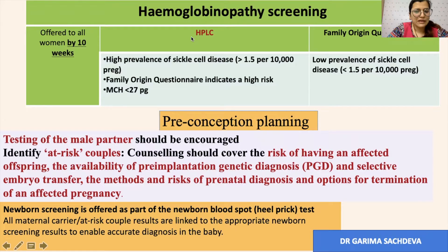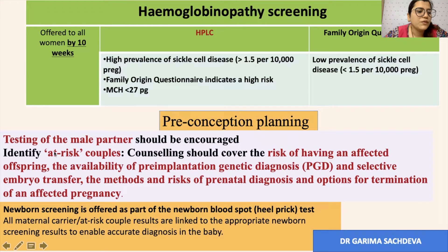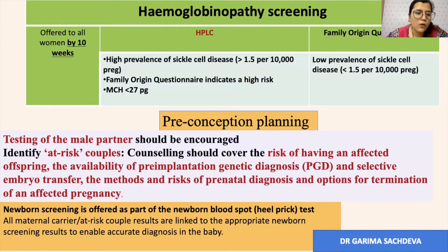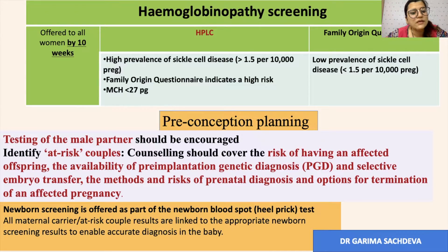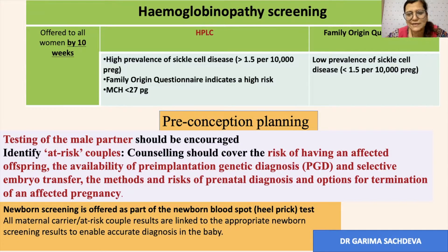Once screening identifies a carrier, you test the male partner. At-risk couples, where both male and female are carriers, are counselled about the risk of an affected offspring. They are offered pre-implantation genetic diagnosis and selective embryo transfer. The methods and risks of prenatal diagnosis and options of termination of pregnancy in case the fetus is affected should be clearly explained to the patients.